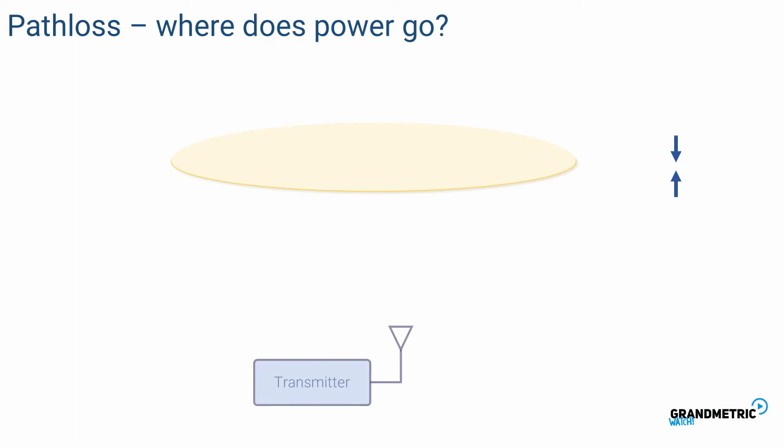Same applies to the transmitted power. At the beginning the transmitted power is contained in a small bubble. If the receiver is close to the transmitter it can capture a lot of power. But when the signal propagates further and further the same power has to cover a larger area, just like the dough. Far from the transmitter the receiving antenna can capture only small fraction of total power.